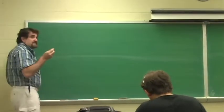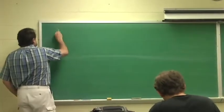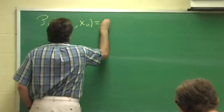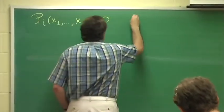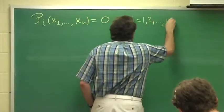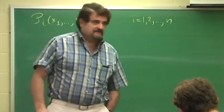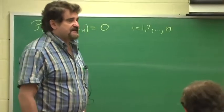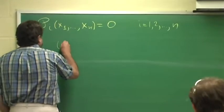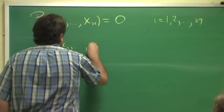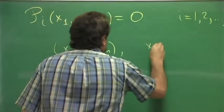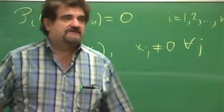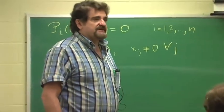Let me start with saying what it is about. We have a system of algebraic equations: n algebraic equations in n complex variables. We are interested in the solutions such that x_j is not zero for any j — the solutions which have all components non-zero.